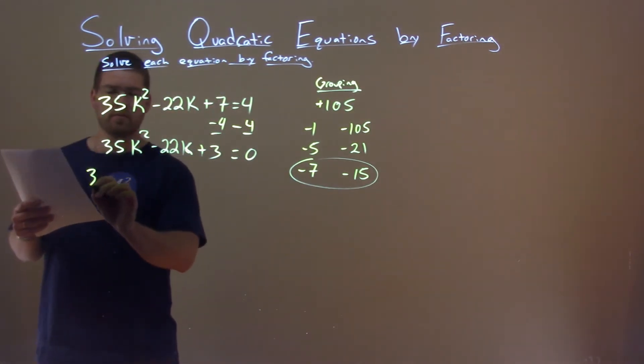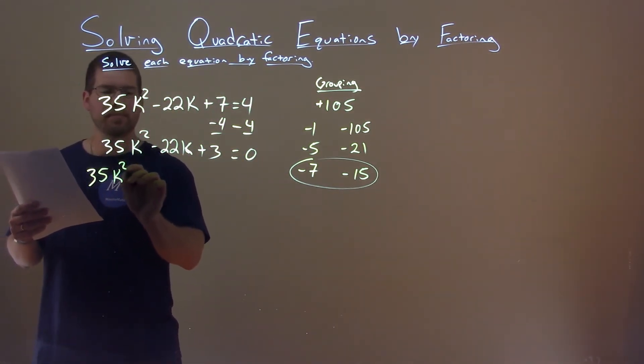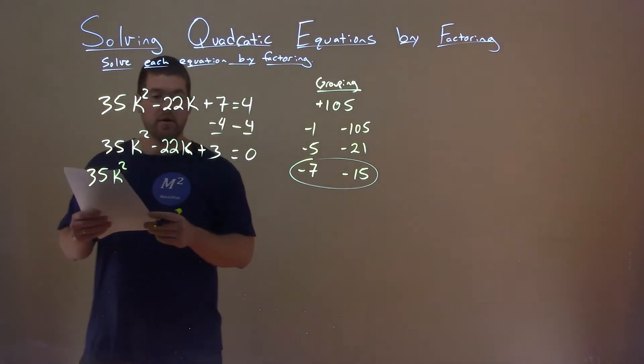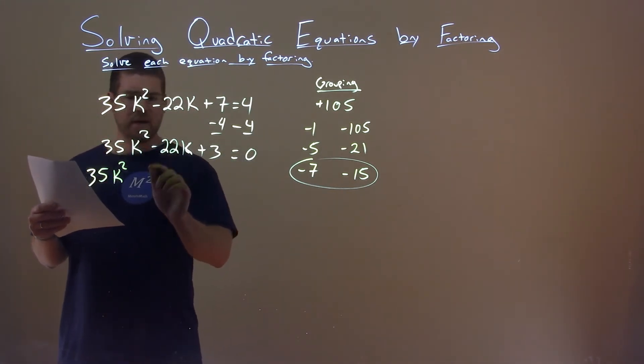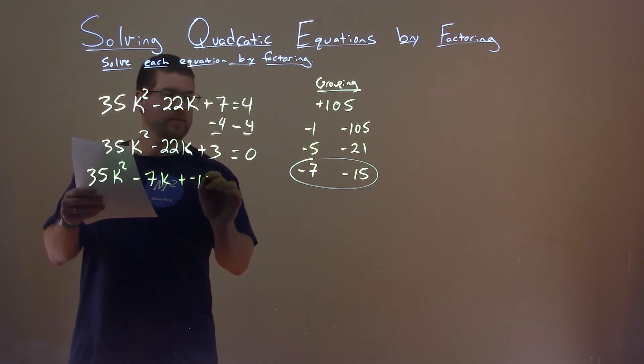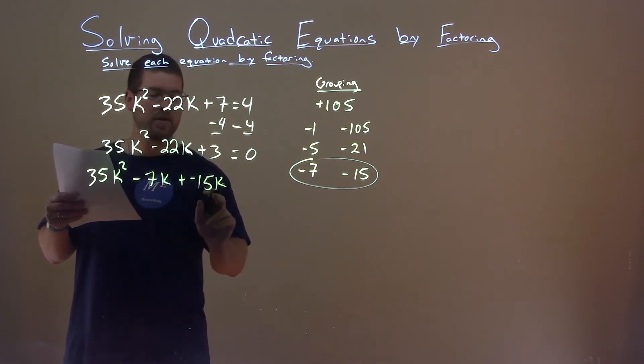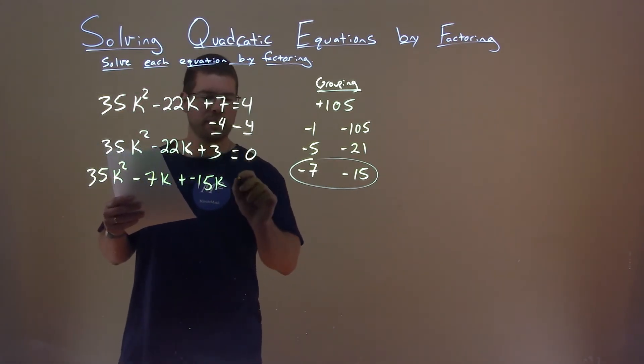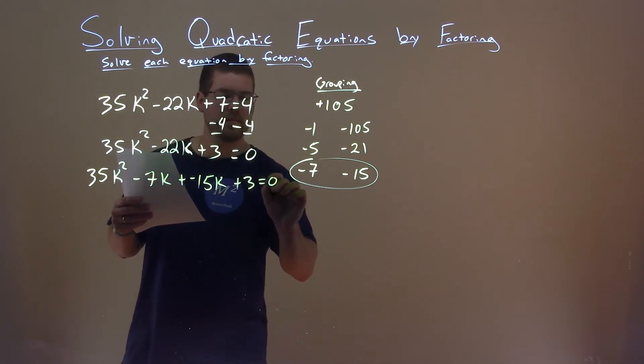So now we're going to rewrite this. Bring down 35k squared, and we're going to break this apart. Negative 22k is negative 7k plus negative 15k. So these two together combine to be that negative 22k. Bring down the plus 3, and that equals 0.